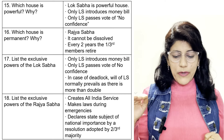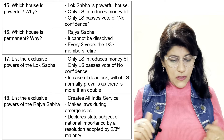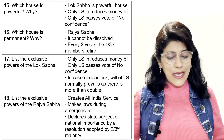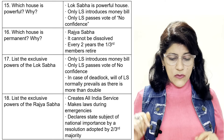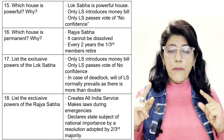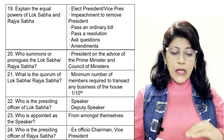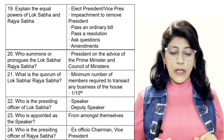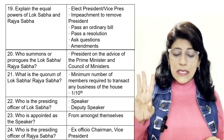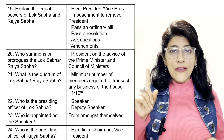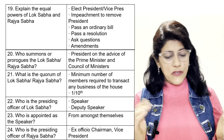In case of a deadlock, the will of Lok Sabha normally prevails as their strength is more than double that of Rajya Sabha. Exclusive powers of Rajya Sabha: creates All India Service, makes laws during emergencies, declares a state subject of national importance by resolution adopted by two-thirds majority. Equal powers of Lok Sabha and Rajya Sabha: elect President and Vice President, impeachment to remove President, pass an ordinary bill, pass a resolution, ask questions, and amendments — all equally distributed.